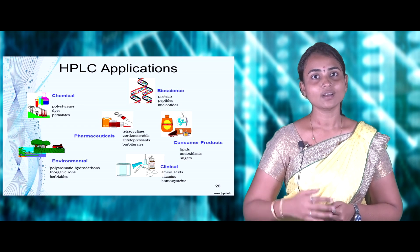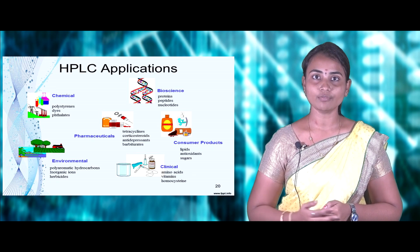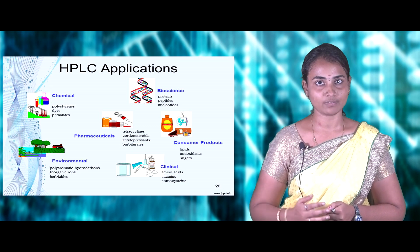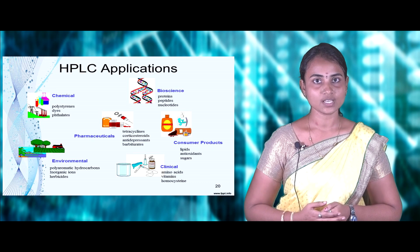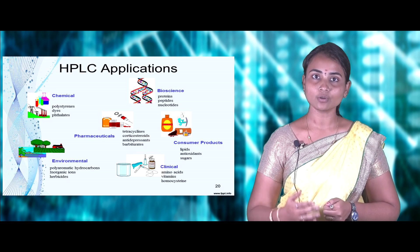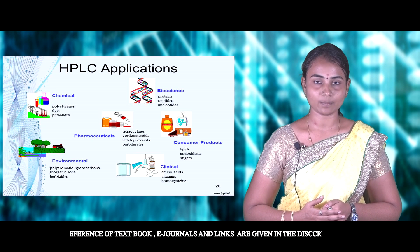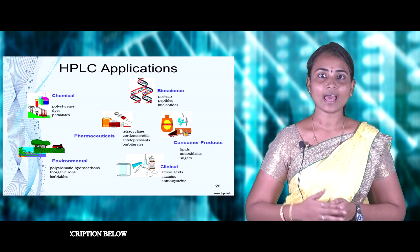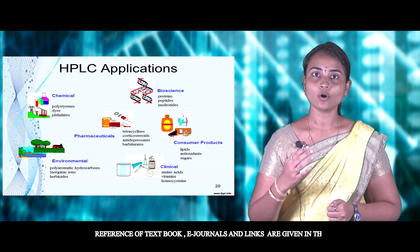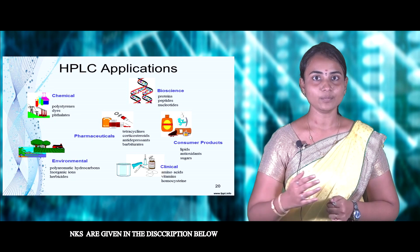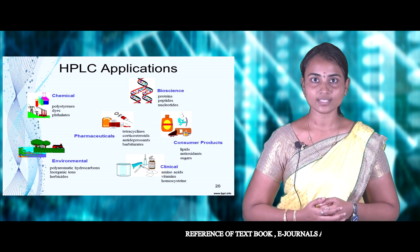Coming to the applications of HPLC: it involves a wide range of disciplines including chemical sciences, biosciences, pharmaceuticals, clinical trials, consumer products, and environmental studies. In chemistry, it is used to purify and separate polystyrene, dyes, and phthalate compounds. In biomolecules, proteins, peptides, and nucleotides can be separated. In pharma, various antibiotics and pharmaceutical products can be separated. Consumer products such as lipids, antioxidants, and sugars can be purified. In clinical trials, amino acids, vitamins, and homocysteine can be quantified. In environmental studies, polycyclic aromatic hydrocarbons, inorganic compounds, and herbicide concentrations can be measured.